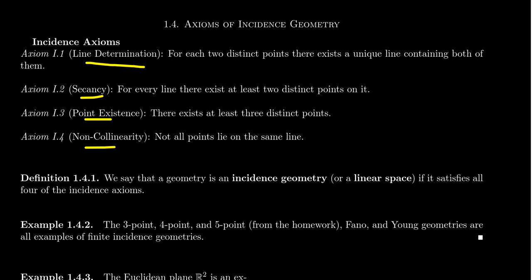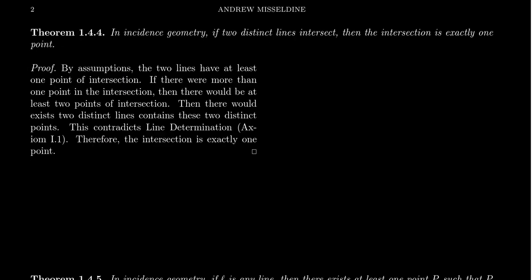Any geometry that satisfies these four axioms is called an incidence geometry. In this video, I want to start developing the theory of incidence geometry and prove some theorems. These theorems will be true for every incidence geometry. We mentioned how 3-point and 5-point geometry, Euclidean geometry, Fano geometry, and Young geometry are all incidence geometries.